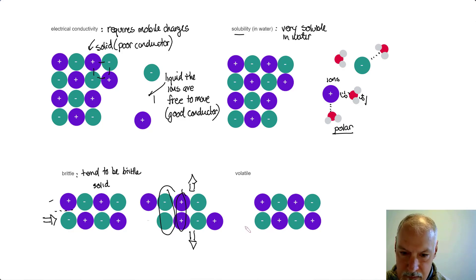Volatility is referred to as the ease of evaporation. Ionic materials tend to not evaporate. This is a reflection of the strength of the ionic bond. It's very difficult for these ions to move from the solid into the gaseous state because of the strength of the ionic interaction holding them in place. That's a quick review of some of the properties of ionic materials.